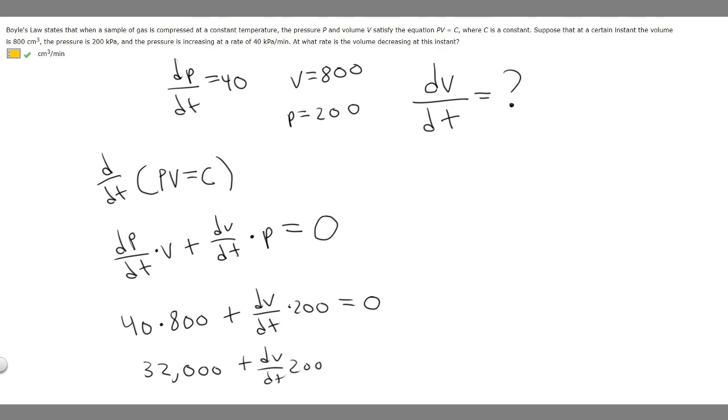What we can do is move the 32,000 to the other side. So if we go ahead and do that, we'll get dV/dt times 200 equals minus 32,000. And then all we've got to do is divide by 200, and it'll give us dV/dt by itself. So dV/dt is going to equal minus 32,000 divided by 200, which is minus 160.